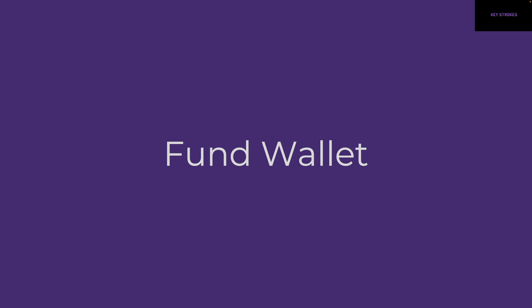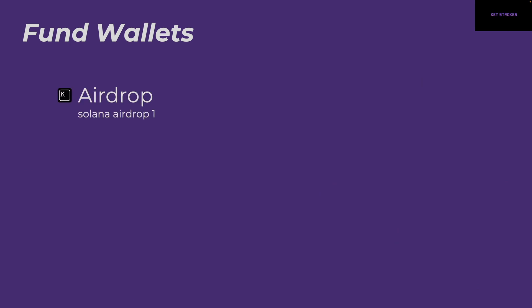Now that we know how to set up wallets and move them back and forth, let's see how to actually fund them. There are two ways. The first is to airdrop SOL to yourself using the Solana command line tools with the airdrop command — unfortunately it doesn't let you airdrop a lot; at most two SOL in one go, and sometimes it just doesn't work at all. That's where the second method comes in: a website called Sol Faucet, which you can use to fund your wallets. All of these airdrops are done on devnet, so it's essentially free.